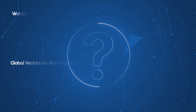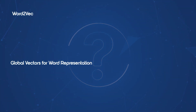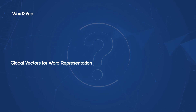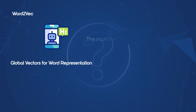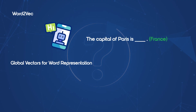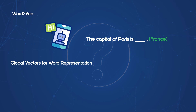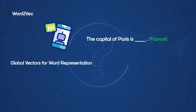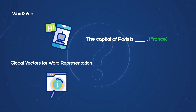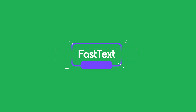When to use Word2Vec versus Global Vectors for Word Representation? Use Word2Vec when focusing on predicting words in a sentence, e.g. chatbot training for next word prediction. Use Global Vectors for Word Representation when you need a global understanding of word relationships, e.g. search engines or recommendation systems.